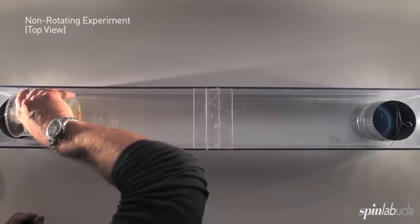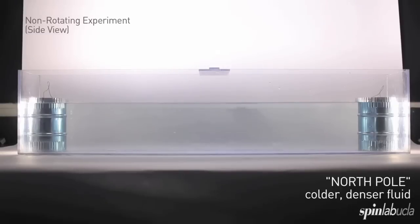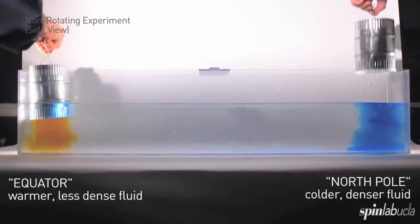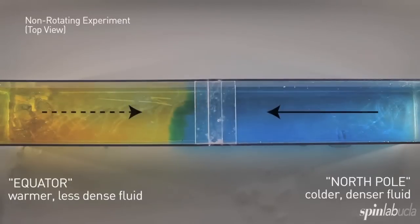The experiment here has blue denser fluid at the north pole on the right and yellow less dense fluid on the left at the analogy to the equator. You can see the blue denser fluid sinks to the bottom of the fluid layer and spreads out, coating the bottom and thereby heads from north pole towards the equator.